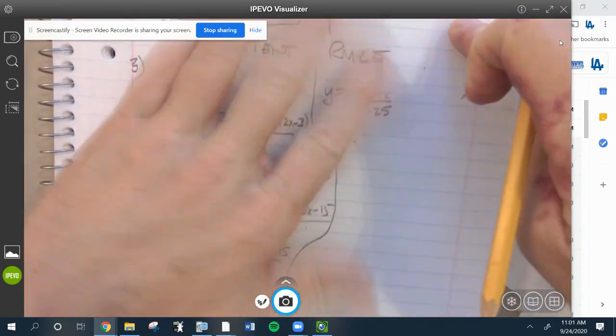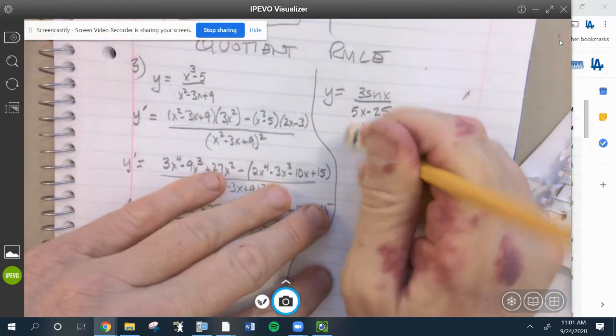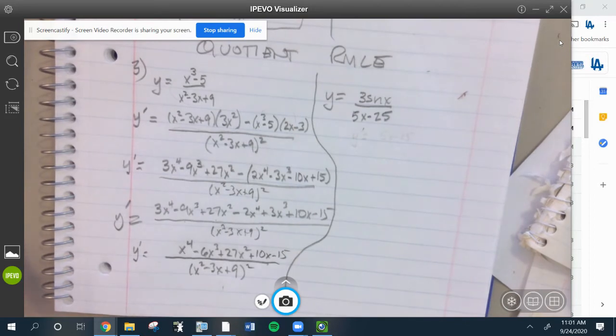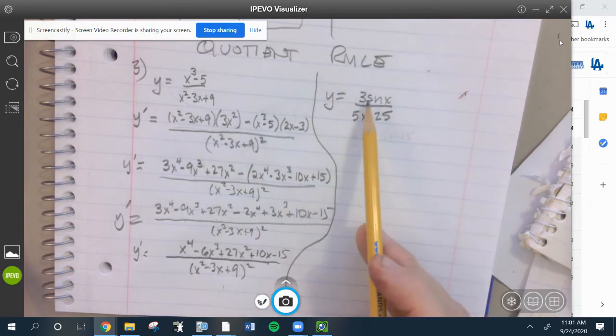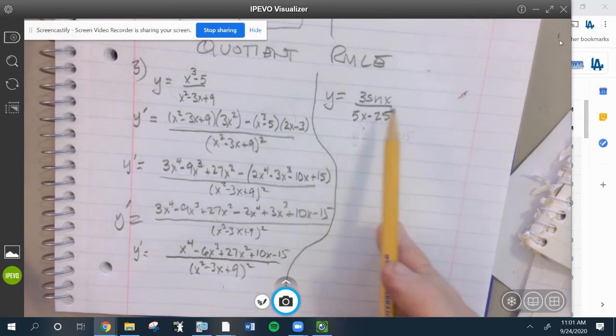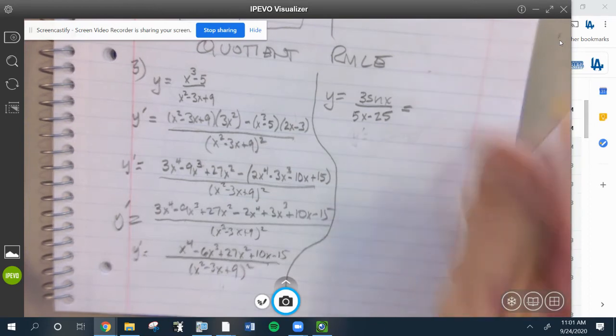One advice I always give to my students, hopefully I've said this, is one thing with calculus: you stop and think before you do. I noticed that this three is a constant multiple, but if you notice the bottom, there's also a constant multiple of five if you factor it out. So I'm going to rewrite this.